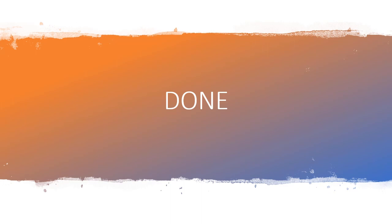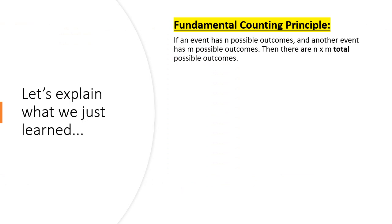I didn't explain the fundamental counting principle or permutations or combinations. Or did I? Well, let me explain. Starting with the fundamental counting principle, which states that if an event has n possible outcomes and another event has m possible outcomes, then there are n times m total possible outcomes.